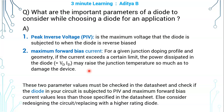For a given diode geometry and area of cross section, it can dissipate only a certain amount of power safely, so that the temperature does not rise heavily and the diode will not burn out.